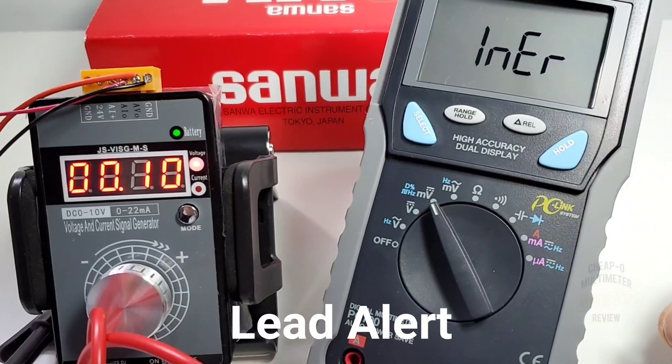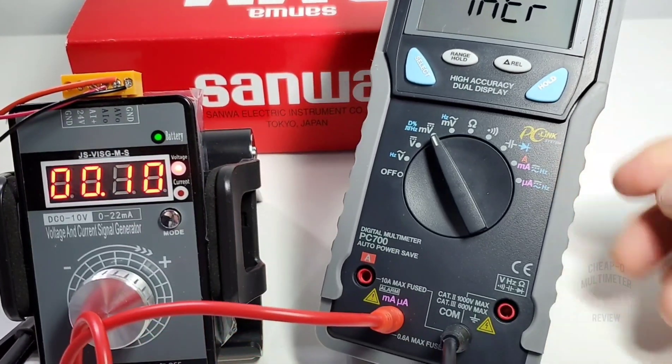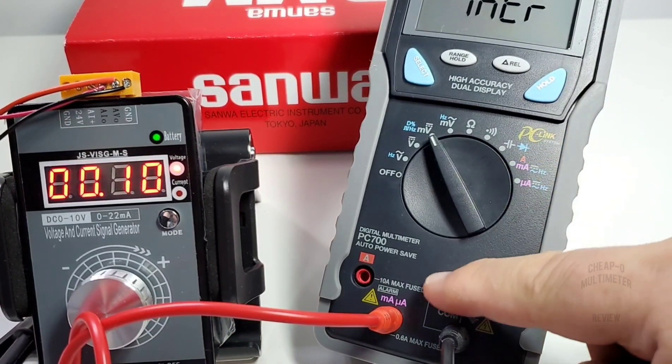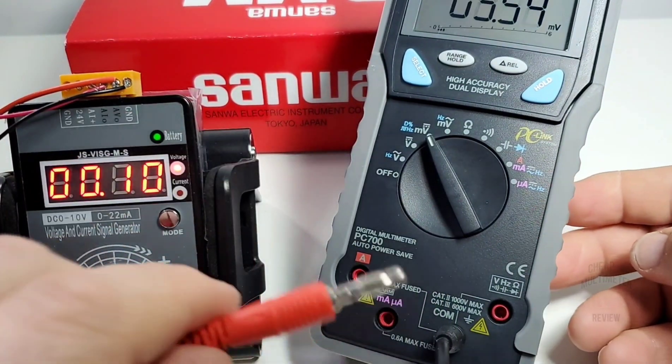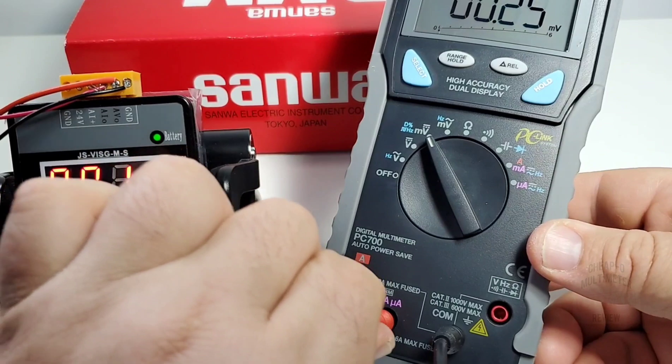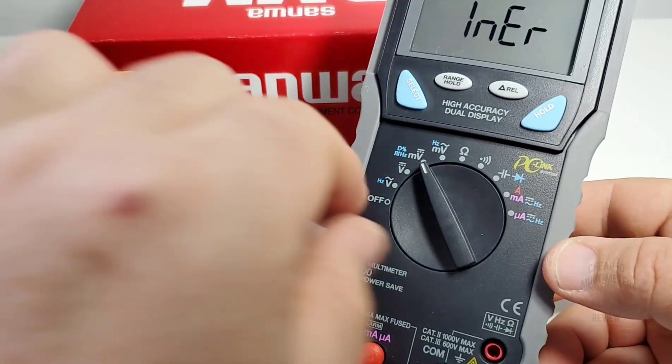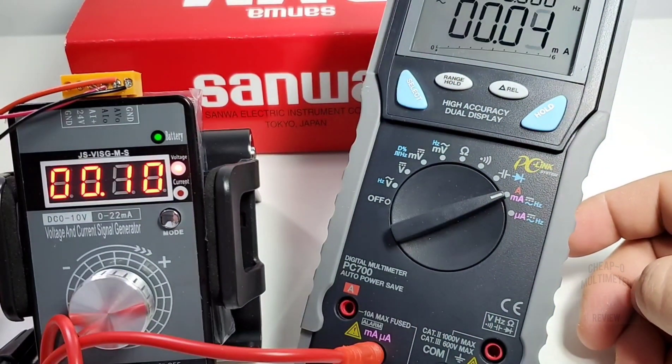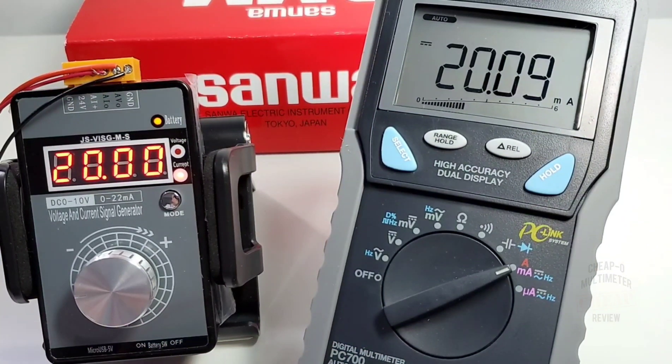Now we're getting an audible alarm. We're about to check milliamps and I'm not in the milliamp range, though I do have the input into the milliamp jack. Take it out, the alarm stops. Put it back in, it's saying stick me in the right range. Milliamps, there we go. We are in milliamp mode and no worries here.